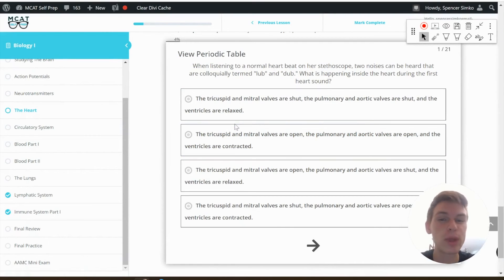So now that we know how the heart works, let's run through these really quick and see which one's going to be true. It says what's happening inside the heart during the first heart sound? Well, the tricuspid and mitral valves are shut. That sounds right, because that's what made the first heart sound.